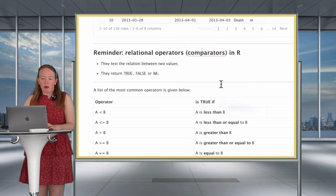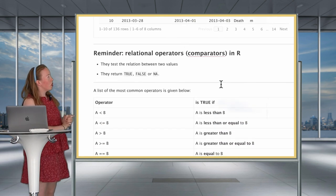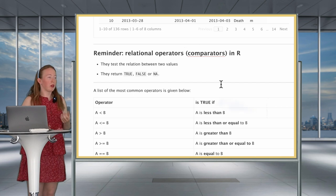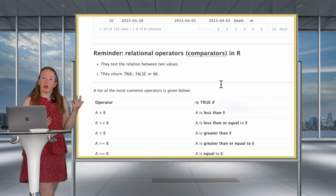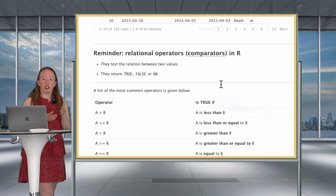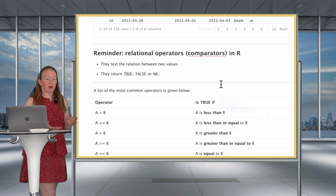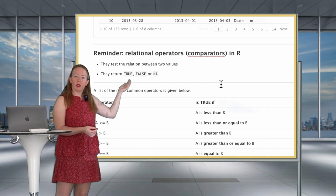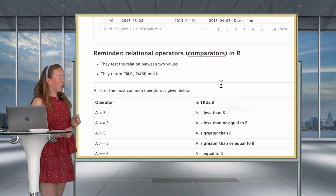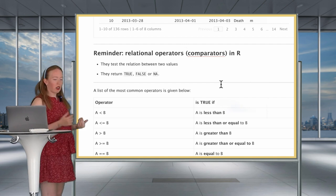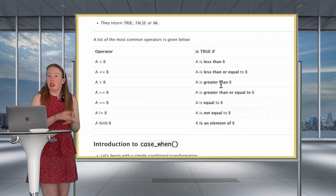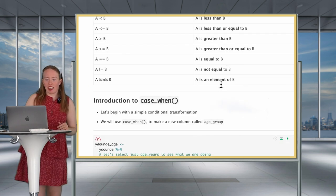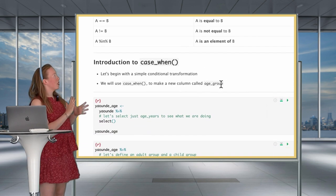We're going to start by talking about relational operators — comparators — because that's quite important in this lesson as we're going to be defining a lot of conditions. These relational operators test the relation between two values and return TRUE, FALSE, or NA. I've compiled a summary of different operators — I'd encourage saving this or pausing the video to have a look. Now, introducing case_when.